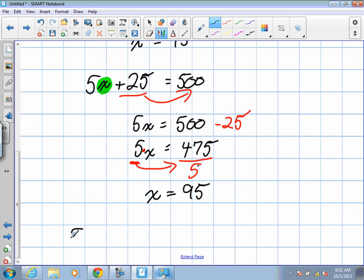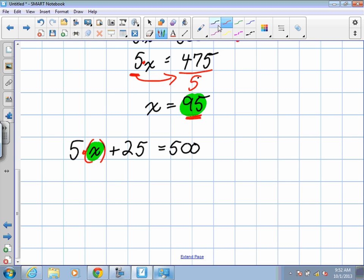We know this is multiplication, and we want to replace the value of x with 95. So this is going to say 5 times 95 plus 25 equals 500. Let's see if this is true.